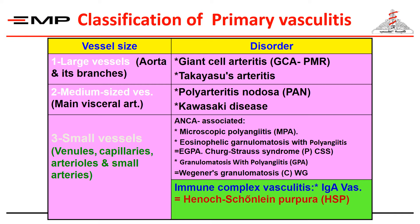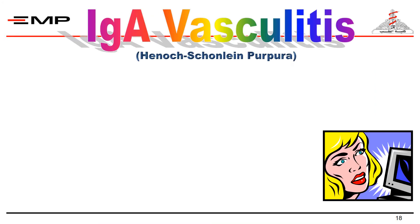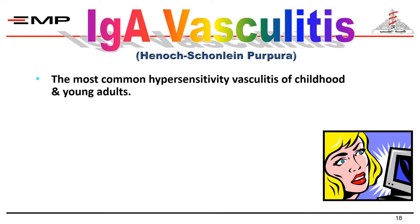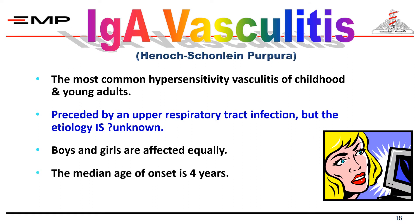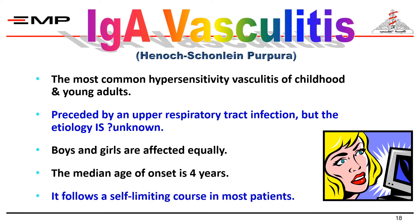The last type of small vessel vasculitis is immune complex vasculitis, of which there are many forms. We will take the example of IgA vasculitis, formerly called Henoch-Schönlein Purpura. It is the most common hypersensitivity vasculitis in childhood and in young adults, often preceded by an upper respiratory tract infection, though the etiology is unknown. Both sexes are affected equally, typically around age four, and in most cases it is self-limiting.